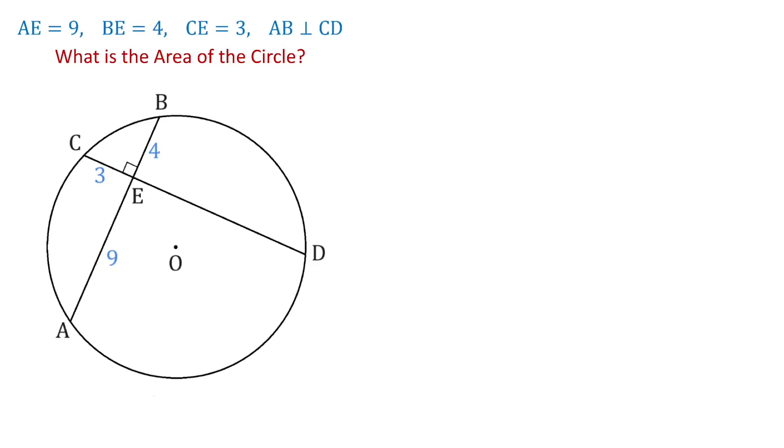Hello! In this figure, the circle has two perpendicular chords, AB and CD. The segment AE has 9 units, BE has 4 units, and CE has 3 units.